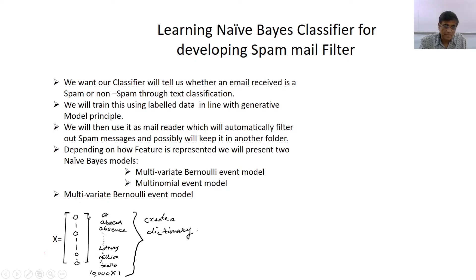So the dimension of the feature vector will be 10,000 by 1 and each element in the multivariate Bernoulli event model can take two values: 0 or 1. 0 means, for example, the first position word is absent. There are 10,000 rows, each representing an indexed word. For example, the second one is 1 means this Avoca's word is there in my mail. So each mail will have a 10,000 by 1 feature vector representation.